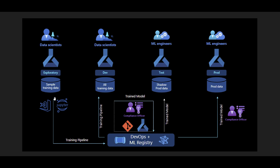For example, as a data scientist in dev, once I'm comfortable with my initial training on a subset of data, I register my code and assets to the centralized registry. When an ML engineer wants to grab those assets to run and test them in staging or pre-prod, they won't come to my workspace or push via DevOps manually. The ML engineer goes directly to registry — knowing all dev assets are there — and grabs them to push to pre-prod or prod.